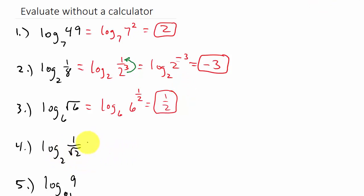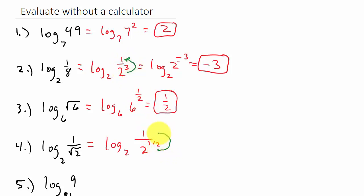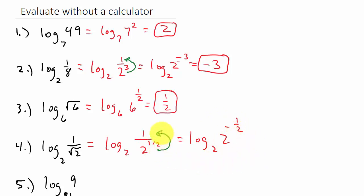Now, log base 2 of one over the square root of 2. We rewrite the square root of 2 as 2 to the one-half, just like before, except this time it's in the denominator. We move it up into the numerator, which changes the sign of the exponent, giving us 2 to the negative one-half. Since the bases are the same, our answer is negative one-half.